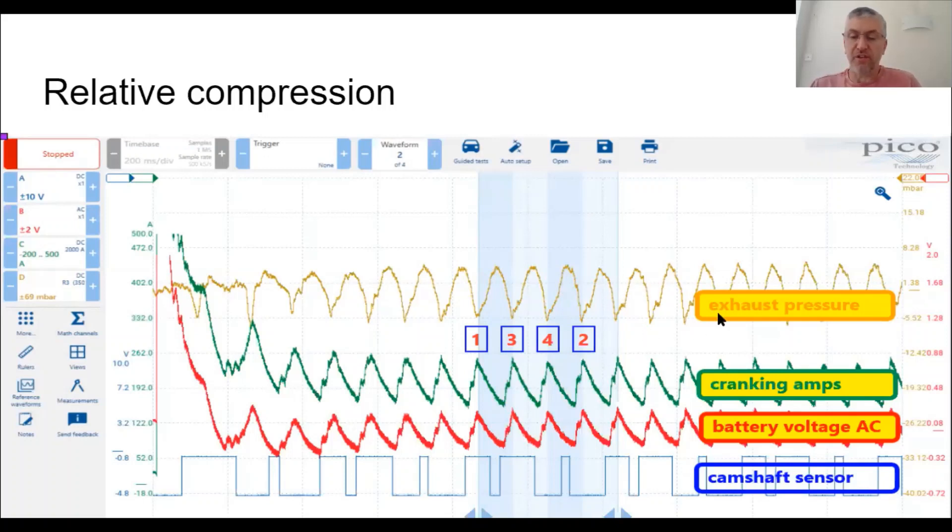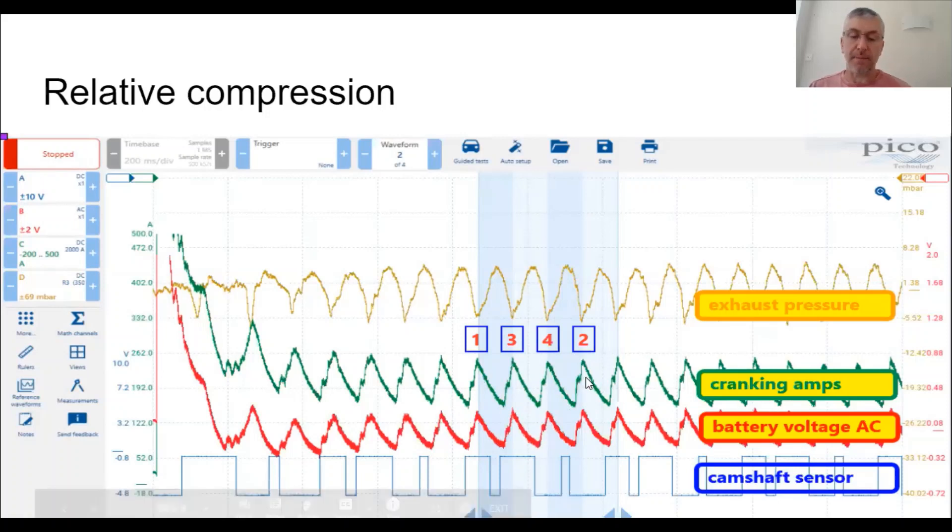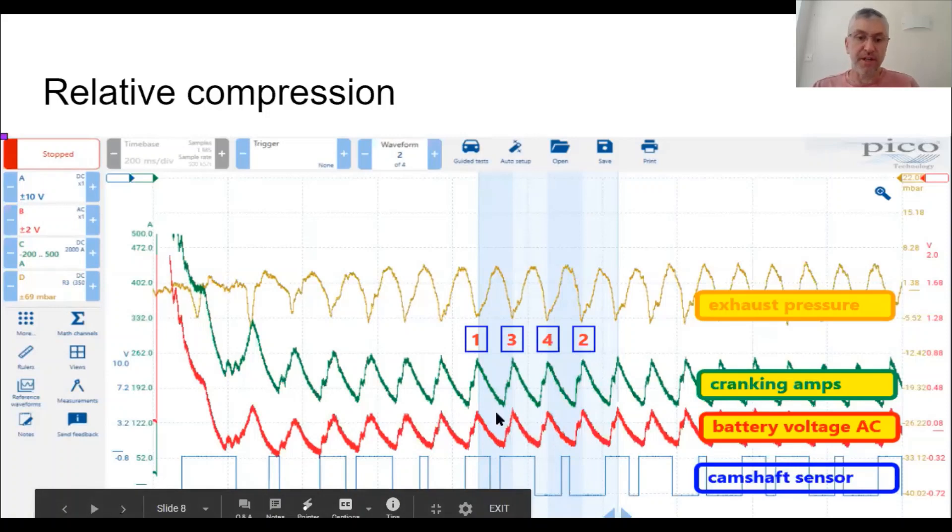Next thing I wanted to just to cover is what if you didn't have an amp clamp? Could you still do relative compression? So the answer is yes. So what I've connected on the red channel here is just AC coupled to the battery. Just so you can compare. So even if I didn't have an amp clamp, I could see what the output from the starter. I could do a relative compression and you can see my AC output from across the battery is pretty much mimicking what I've got from the amp clamp. So even if I only had a two channel scope and no amp clamp, I could still do a relative compression and identify which cylinder is low on compression. I hope that makes sense.